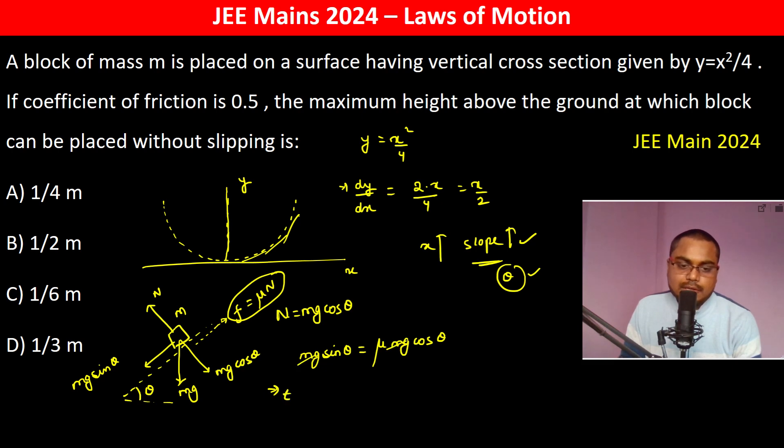Now what is tan theta? Tan theta is dy by dx. So therefore mu that is 0.5 should be equal to x by 2. So x becomes 1. Therefore y will become x square by 4 which is equal to 1 by 4.